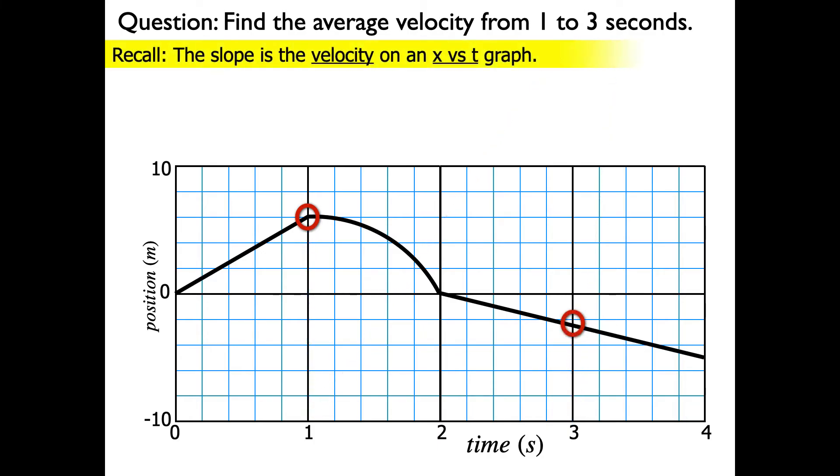Now, recall that the slope on this graph is the velocity. So what I'm going to do to find the average velocity is I'm going to draw a line between the two points at 1 second and 3 seconds. And then I'm going to find the slope of that line. So here's my line connecting my two dots.